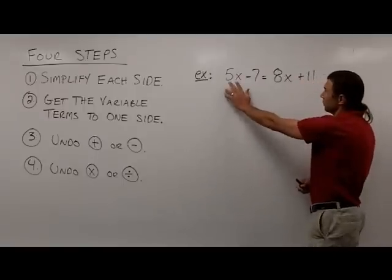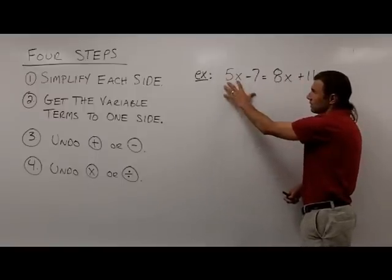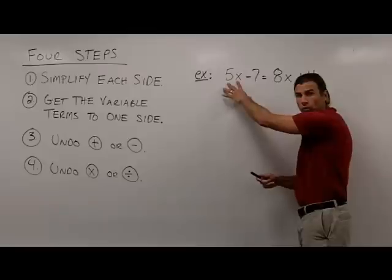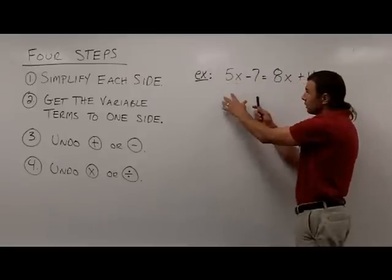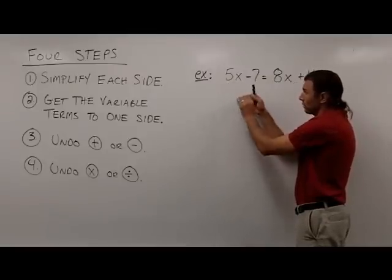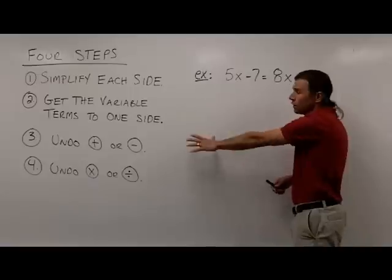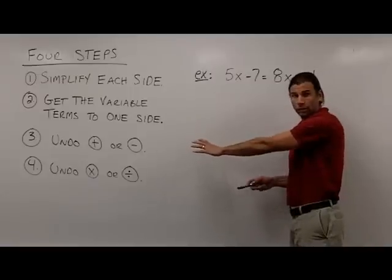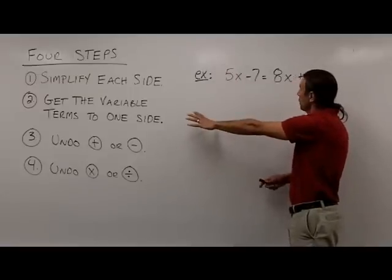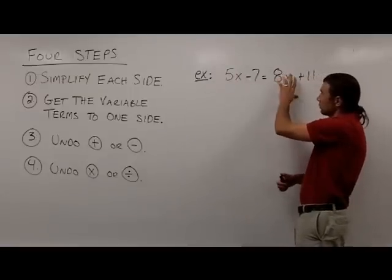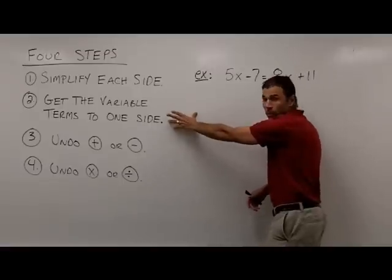Of my variable terms, I have a 5x and I have an 8x. It's going to be easier if we move the smaller one, which is the 5x. To move this, I'm not actually going to move it — I want to get rid of it over here on the left side. So if I can make it disappear, I'm going to have all the variable terms over here on the right side, and I'll be done with step 2.